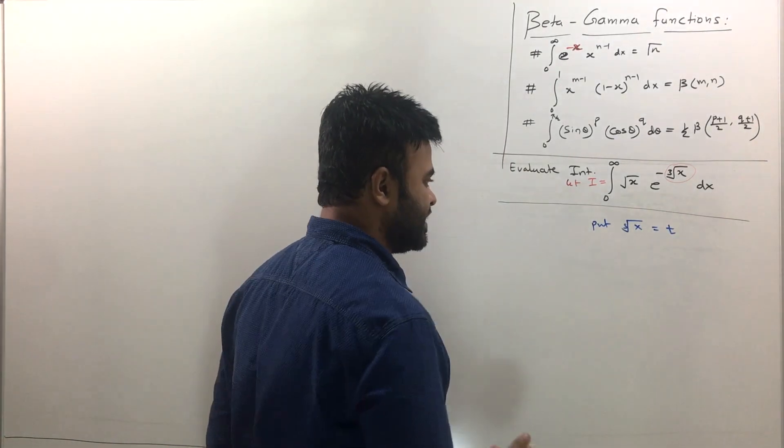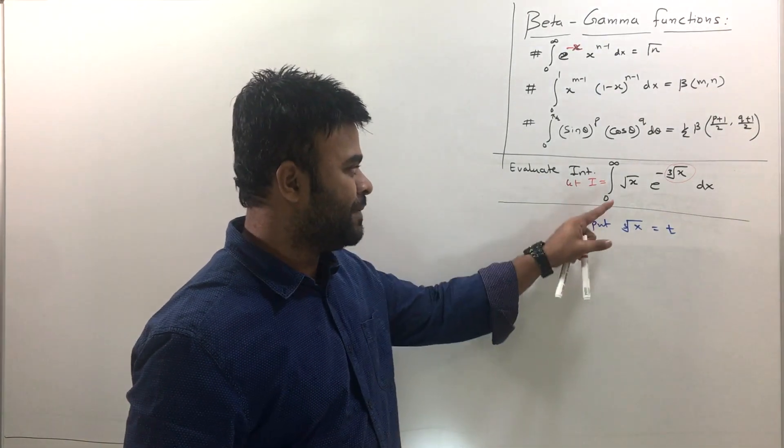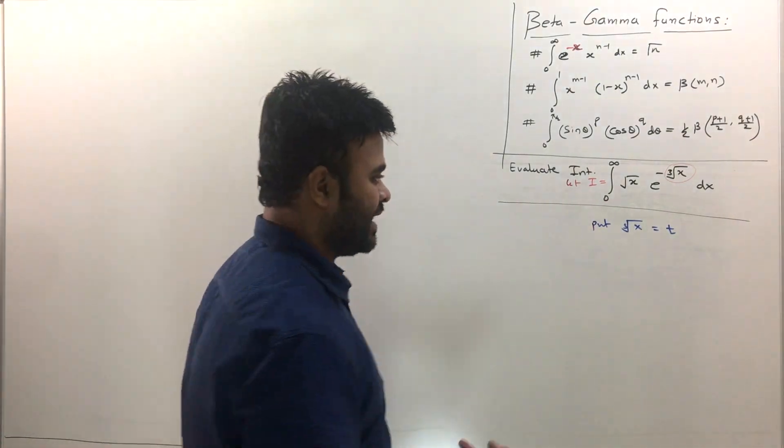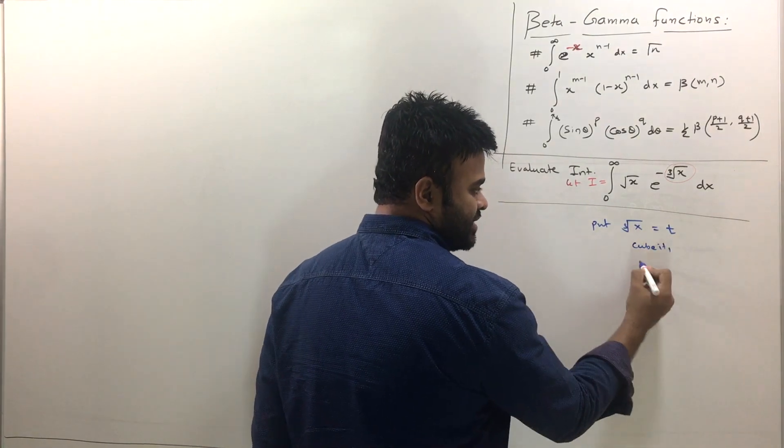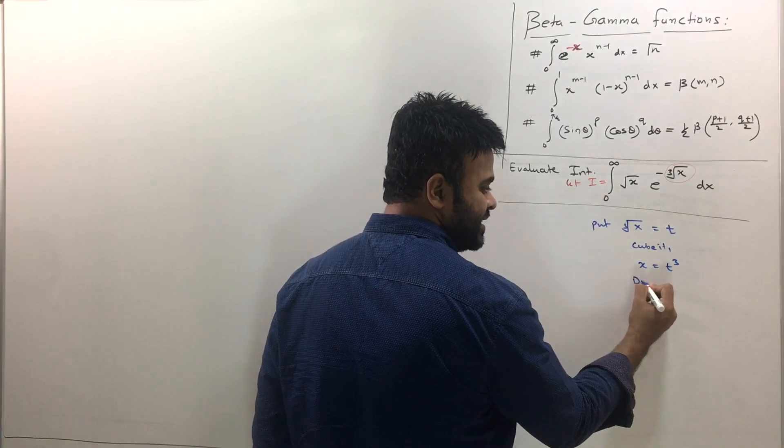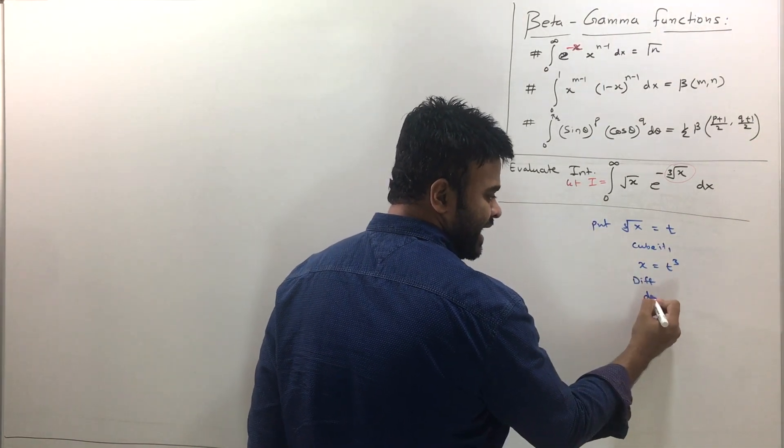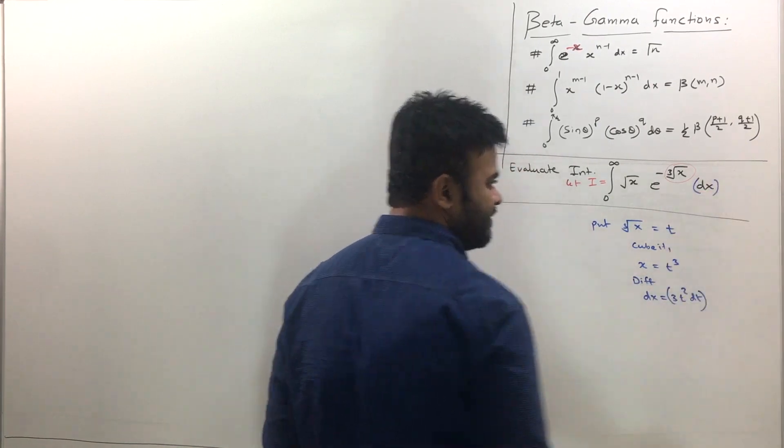Now let me simplify this. When I replace x by t, my entire integral will go from variable x to variable t. See how that is done. Let me cube it. So if I cube it, this will become x is equal to t cube. And now let us differentiate. Now if I differentiate, I get dx is equal to 3t square dt. So now that's a replacement for dx that I found.